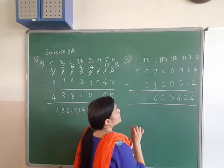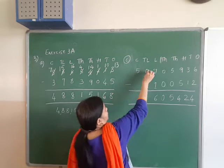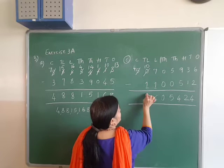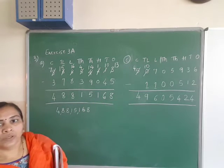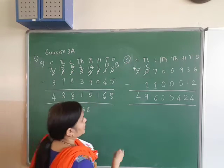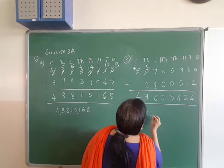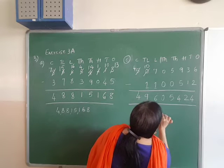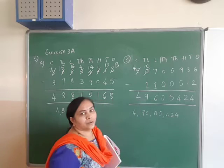7 minus 1 is 6. 0 minus 1 — you cannot subtract, so carry over: this will become 4, this will become 10. 10 minus 1 is 9, and this remains as 4. There is no subtraction left, so 4 remains. The answer is 4,96,00,5,424.